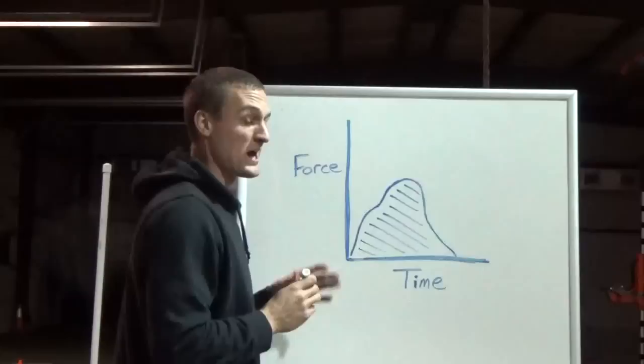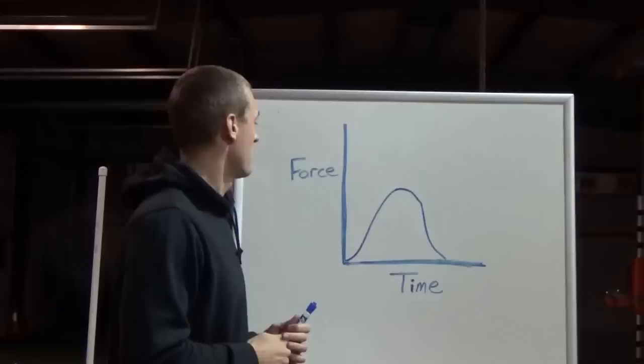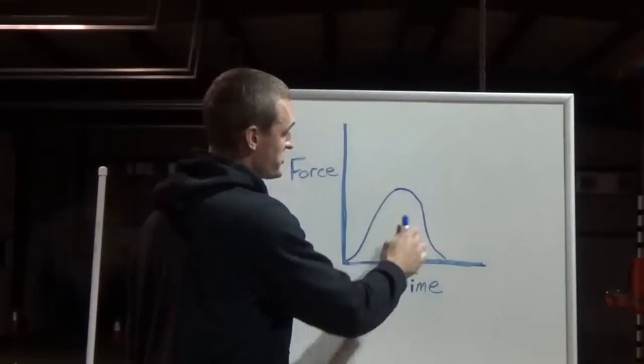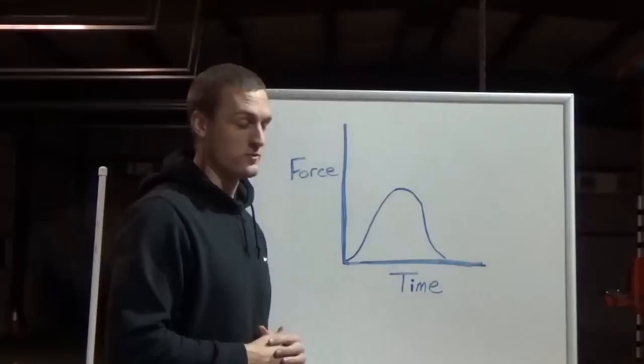So what we're going to be looking at is impulse, vertical impulse during sprinting. Let's say that this force graph represents the vertical force that you push into the ground during one contact in a sprint. And then the area underneath this curve would be your impulse. So that would be your vertical impulse.